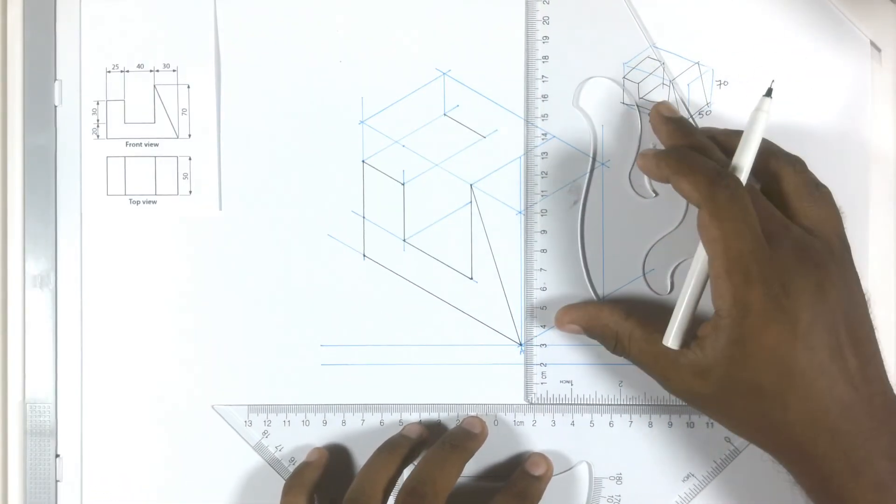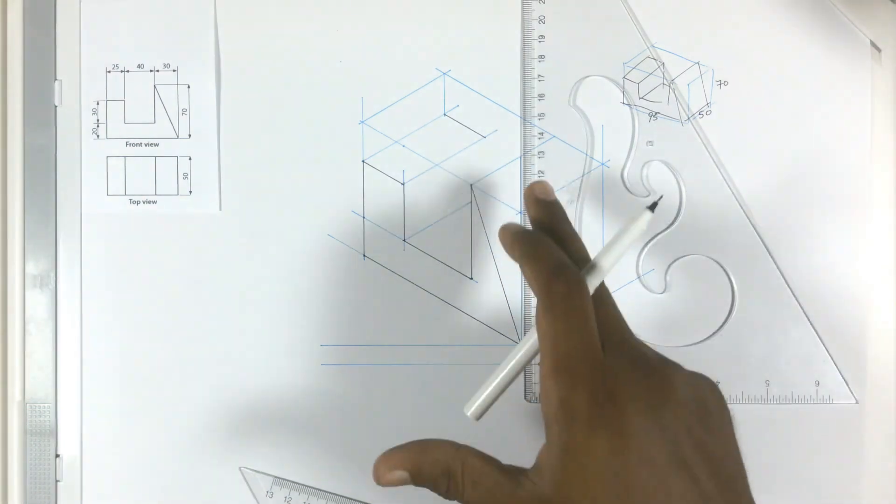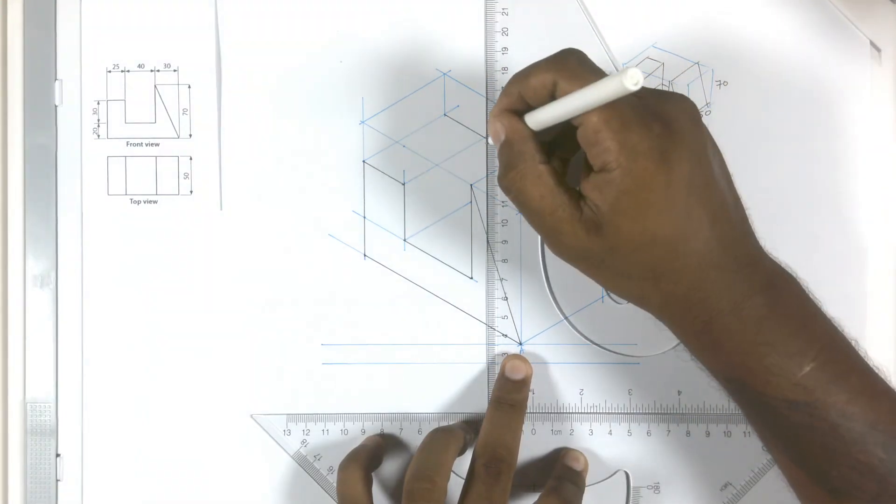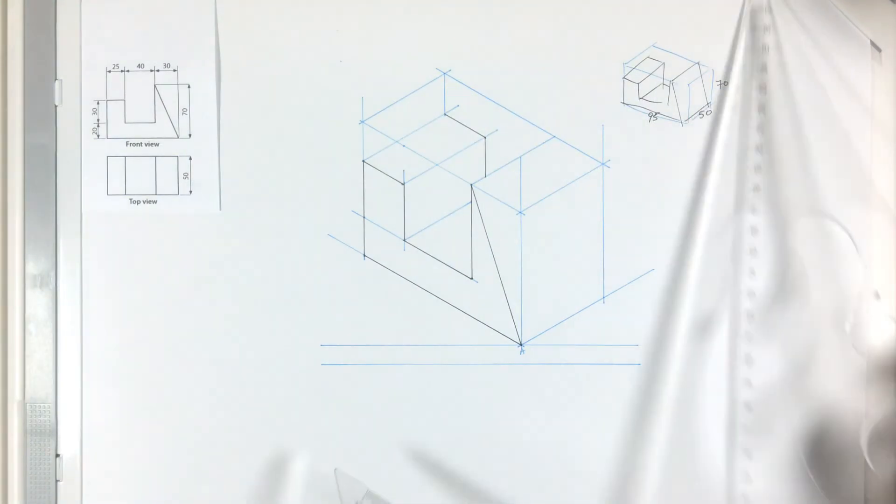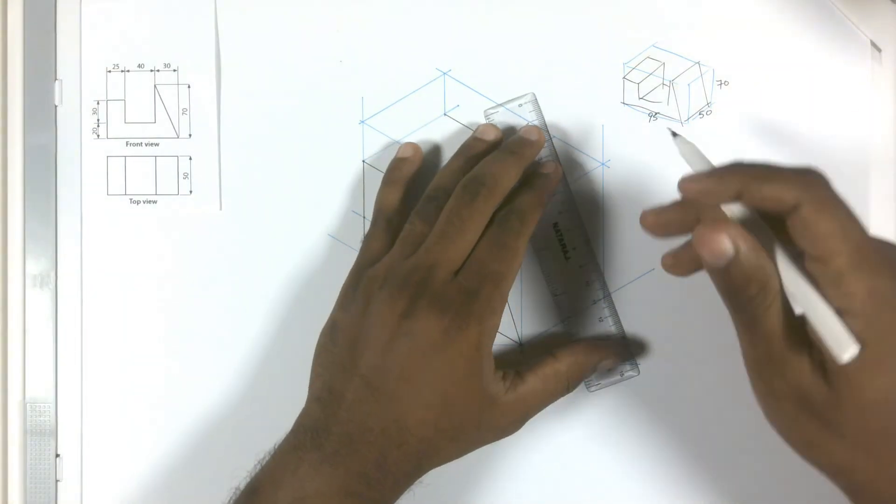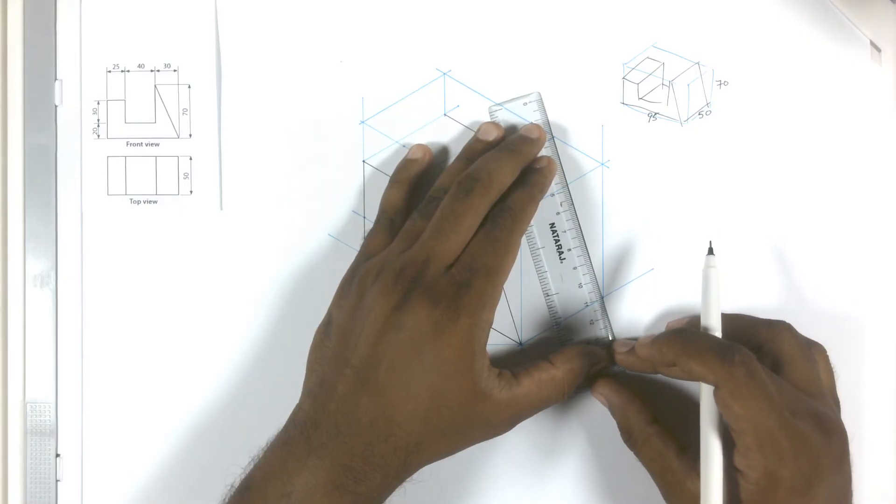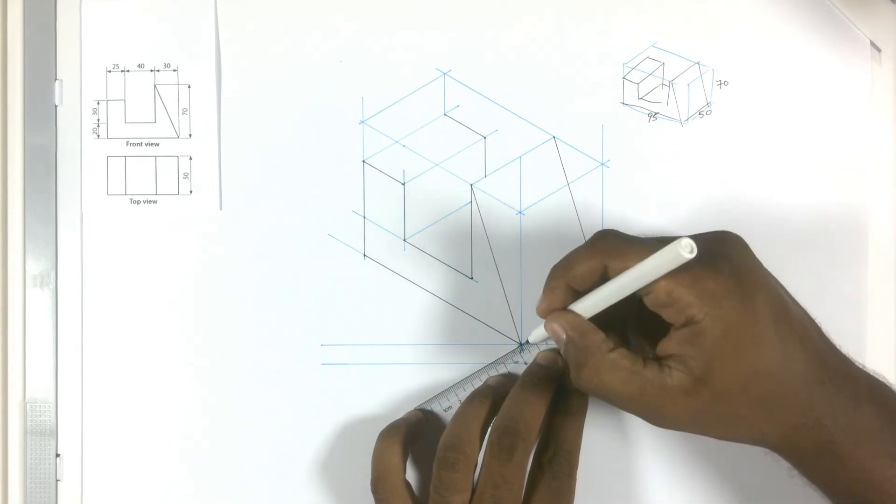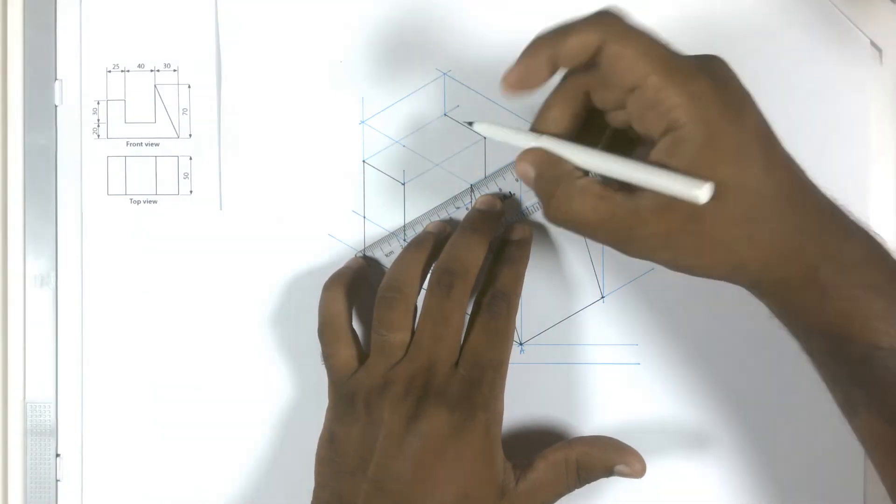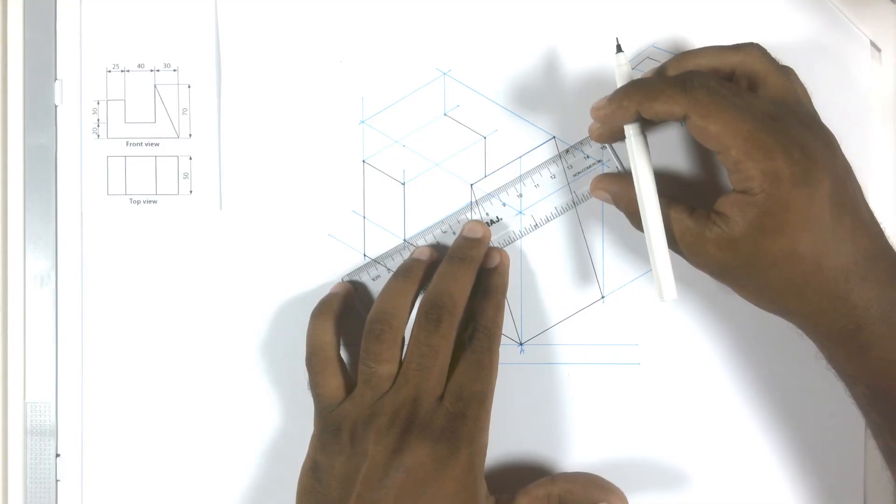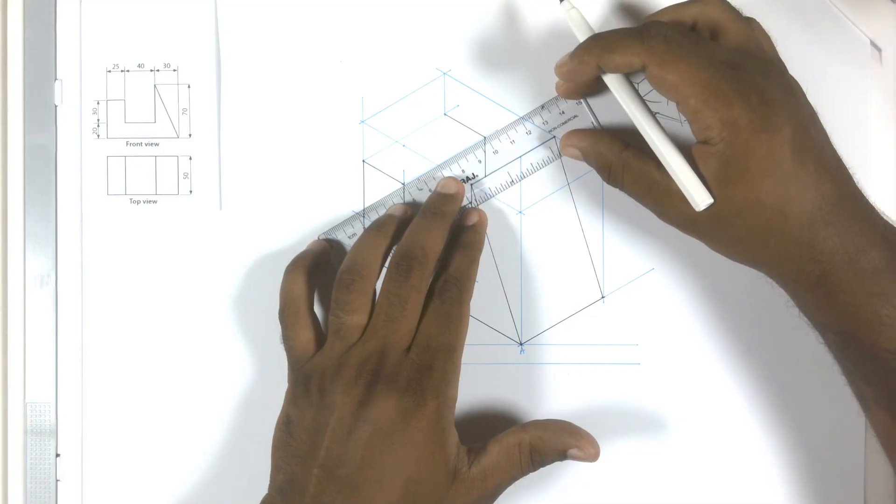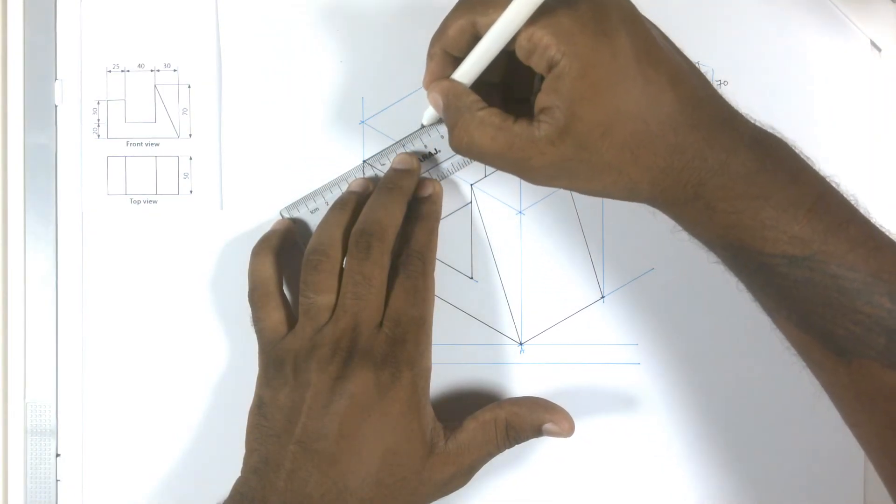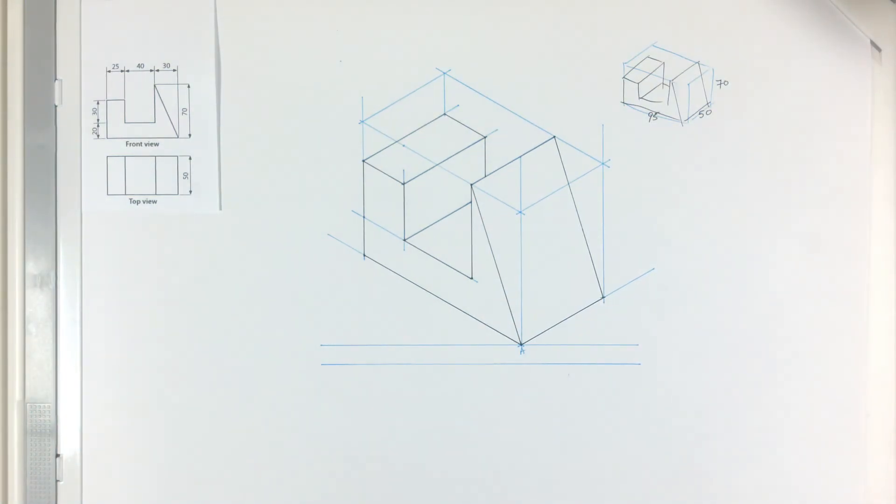We will have a vertical line here. Let me use this crate as reference and draw this vertical line. Now I can use my small ruler to complete the drawing. So we will have an inclined line here, one line here, one on the top, here. We have now completed this object in isometric projection.